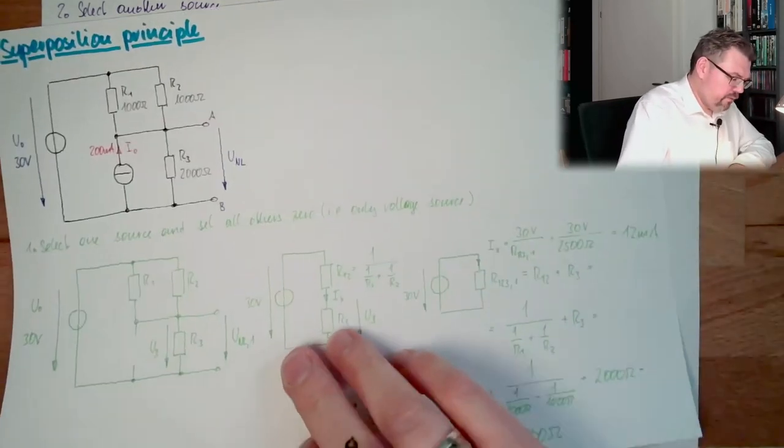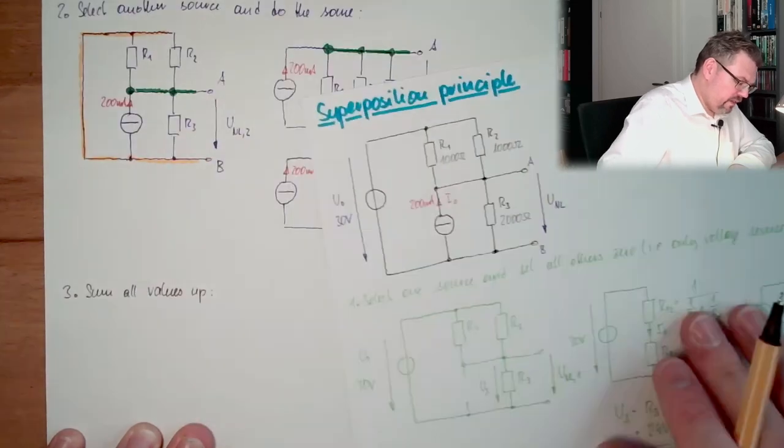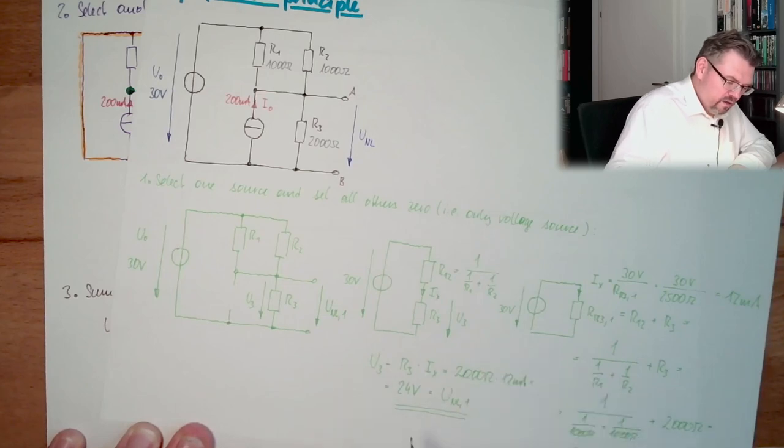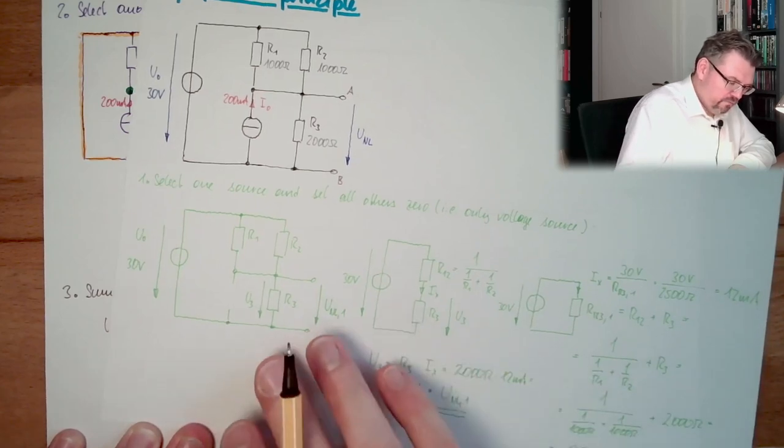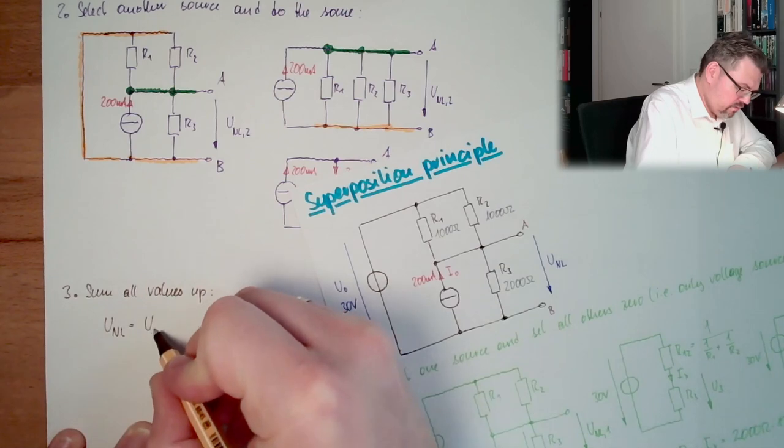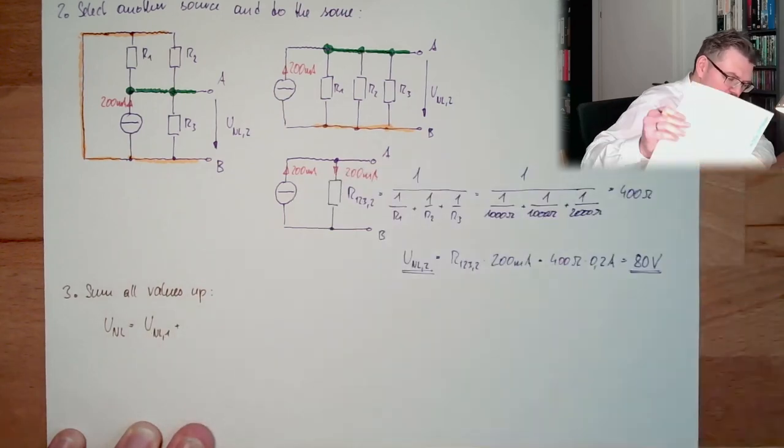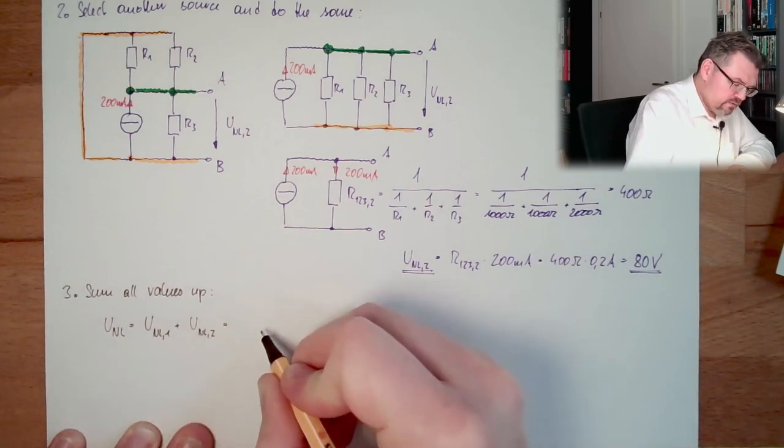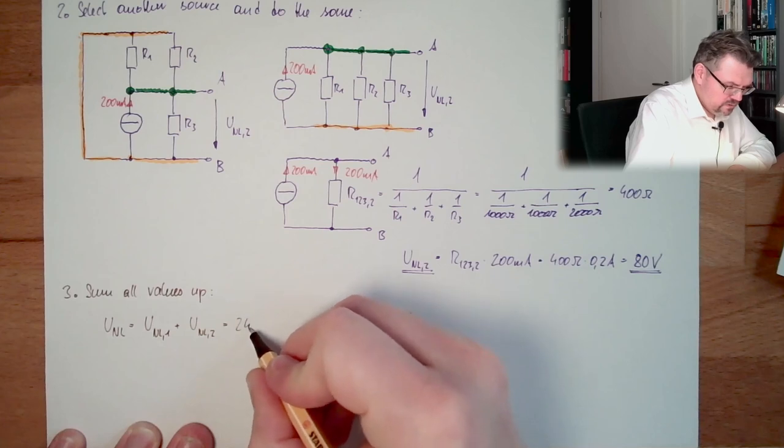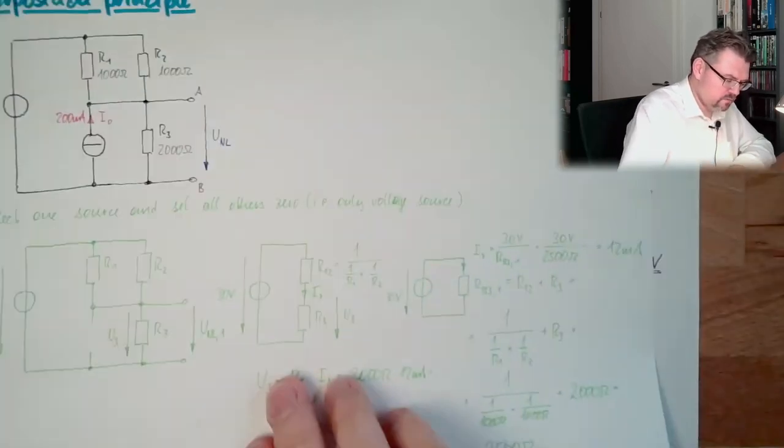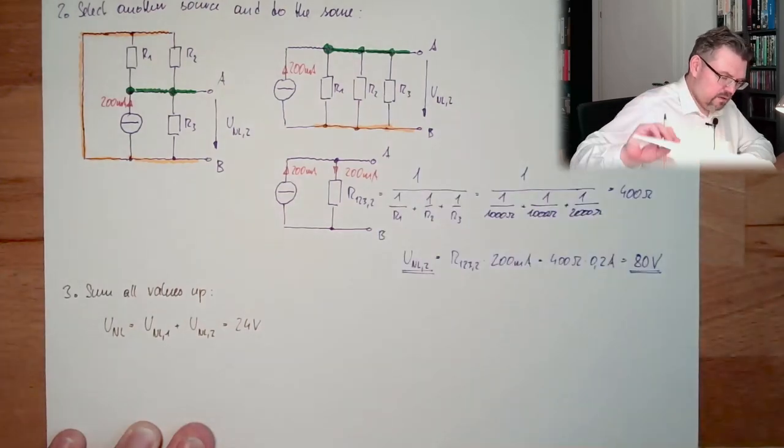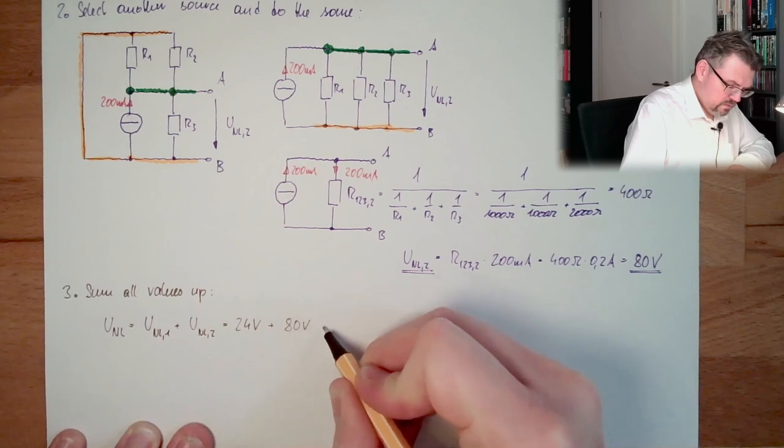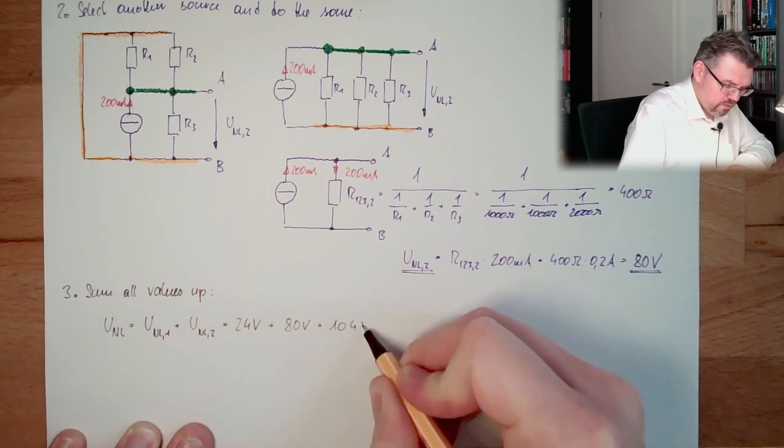And now, R1232 multiplied by 200 milliamps. So this is 400 ohms multiplied by 0.2 amps, so it's a fifth part, actually. So 400 multiplied by 0.2 equals 80 volts. Now we have done this for all sources inside. And the final step, step number three, sum all values up.